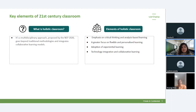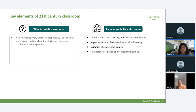Some elements of the holistic classroom include a lot of emphasis on collaborative learning, critical thinking, and engaging students in activities where they themselves become more of a self-learner — because self-learning is the future and something that stays with students for life. There's also a lot of emphasis on flexibility and personalized learning.